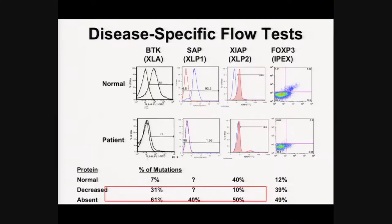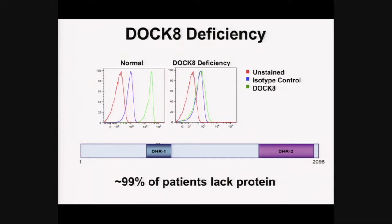Flow testing is also useful for variants of unknown significance: if we find a mutation that's not clearly a stop codon or frameshift, we can do flow and if the protein is absent, that tells us it destabilizes the protein and causes disease. One particularly excellent test is for DOCK8 deficiency — most patients have deletion-insertion mutations that abrogate protein expression, so flow picks up 99% of patients. This saves having to sequence a gene with over 40 exons, which is expensive and difficult.